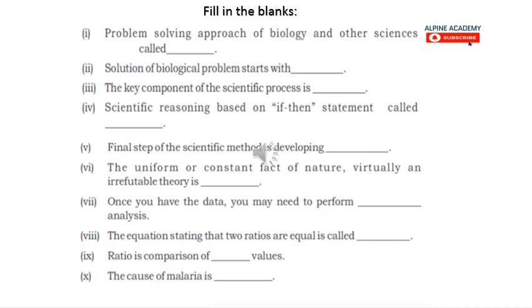The equation stating that two ratios are equal is called proportion. Ratio is the comparison of two values — so the answer is two values. That covers the ratio and proportion blanks.